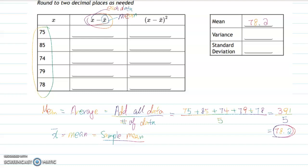Let's begin. For 75: 75 minus 78.2 equals negative 3.2. I'll do the same procedure for 85, 74, 79, and 78. You will get 6.8, negative 4.2, 0.8, and negative 0.2.